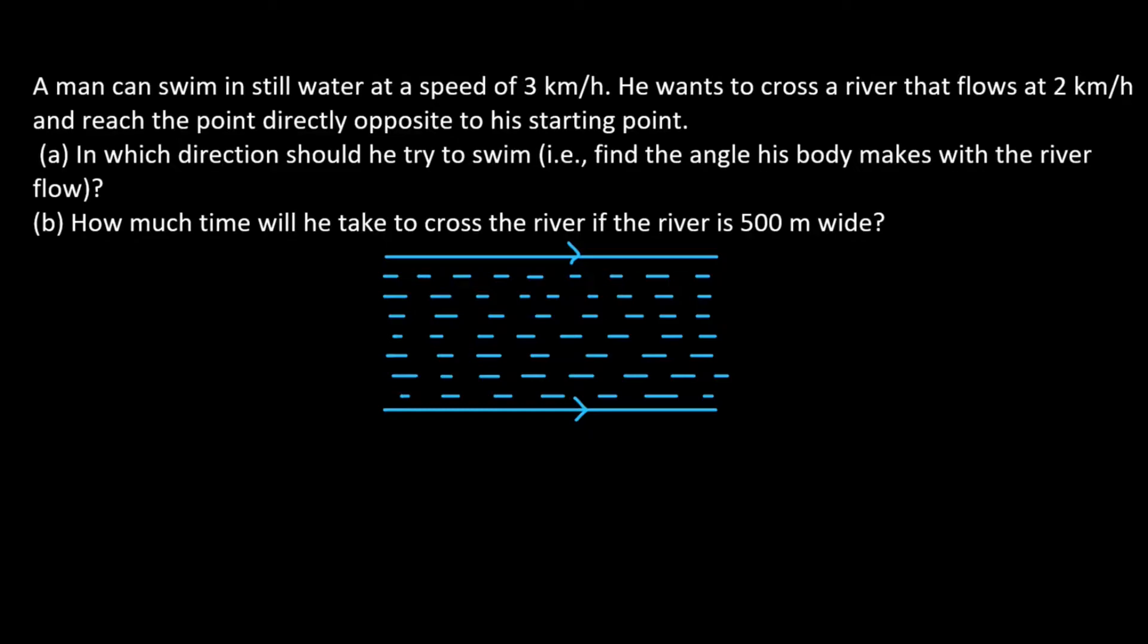We have two sub-questions. So, the river has velocity in this direction. In common sense, he should swim against the river. If he swims in the direction of the river, he will move in the same direction as that of the river.